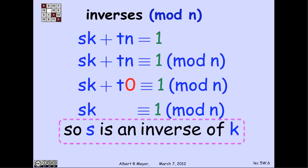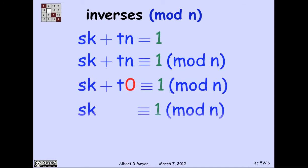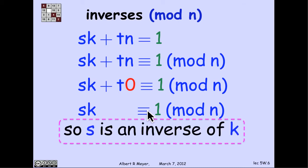Let's look at that slightly more carefully and see what's going on. I have that s·k + t·n = 1. So that means, in particular, since they're equal, they're certainly congruent to each other modulo n. s·k + t·n ≡ 1 (mod n). But n is congruent to 0 mod n. So this becomes t times 0. And we're left with s·k ≡ 1 (mod n), which is exactly the definition of s being an inverse of k.